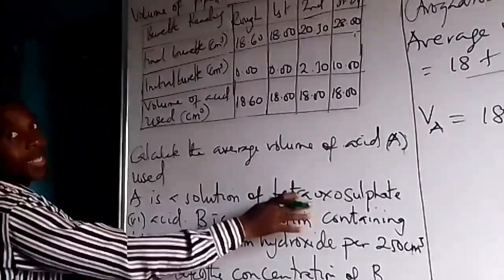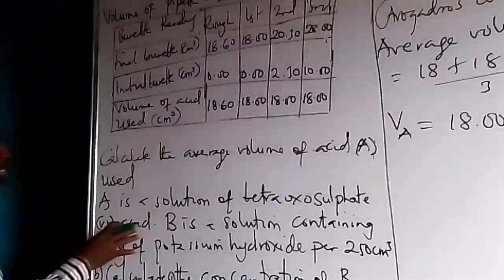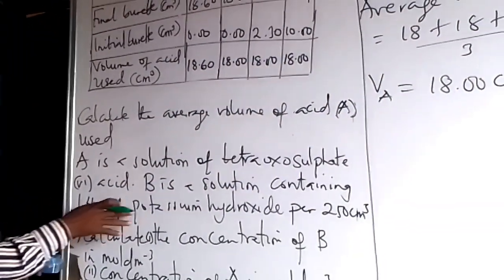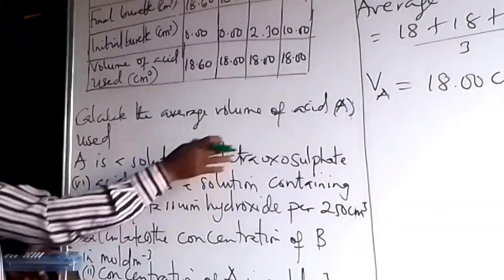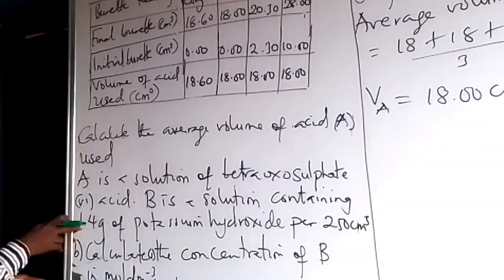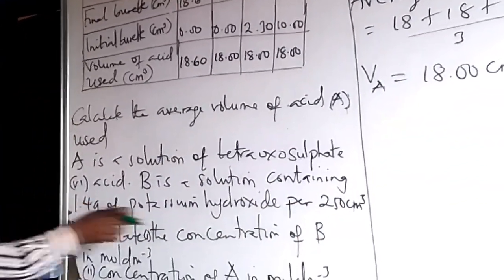So the acid there is tetraoxosulfate(VI) acid, H2SO4. B is a solution containing 1.4 grams of potassium hydroxide. So this is the acid, this is the base, per 250 cm³. Now this is mass, this is the volume.